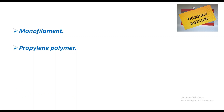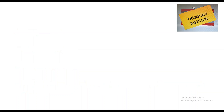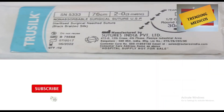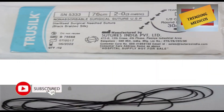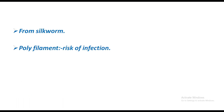Nylon, also called polyamide, is monofilament. The wrapper is green but the suture material itself is black. It is a polyamide polymer, causes less tissue reaction, and is used in skin closure.